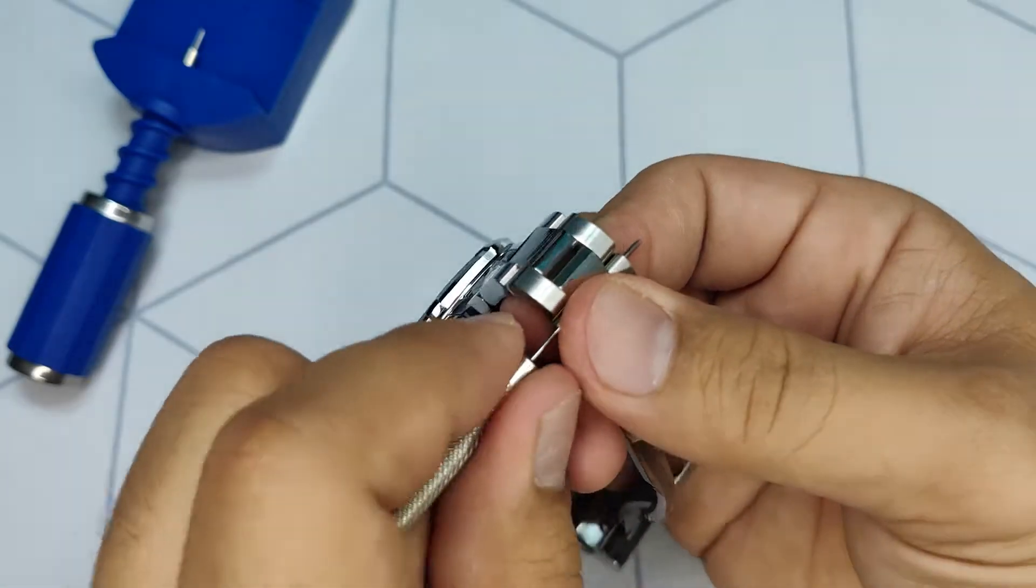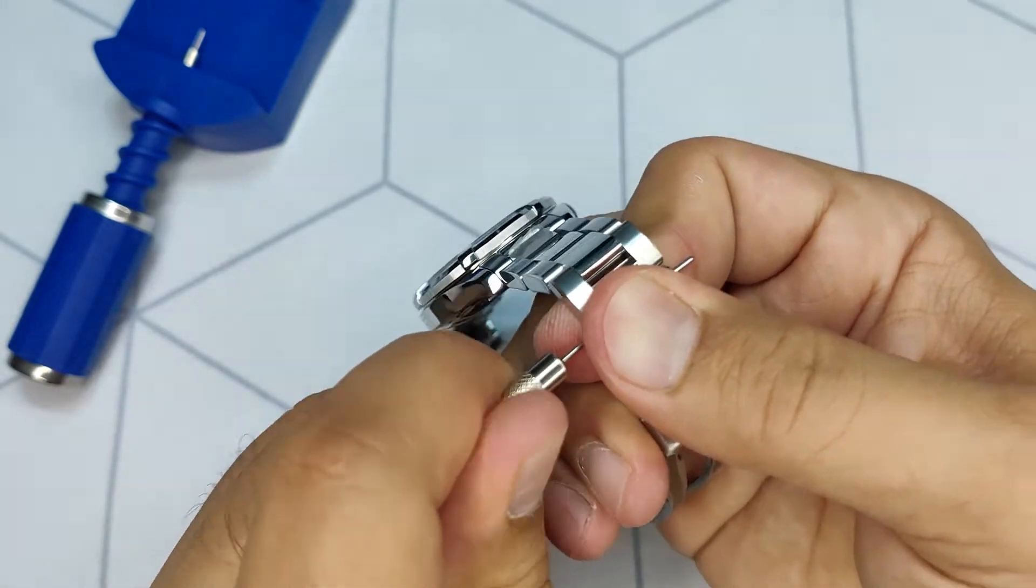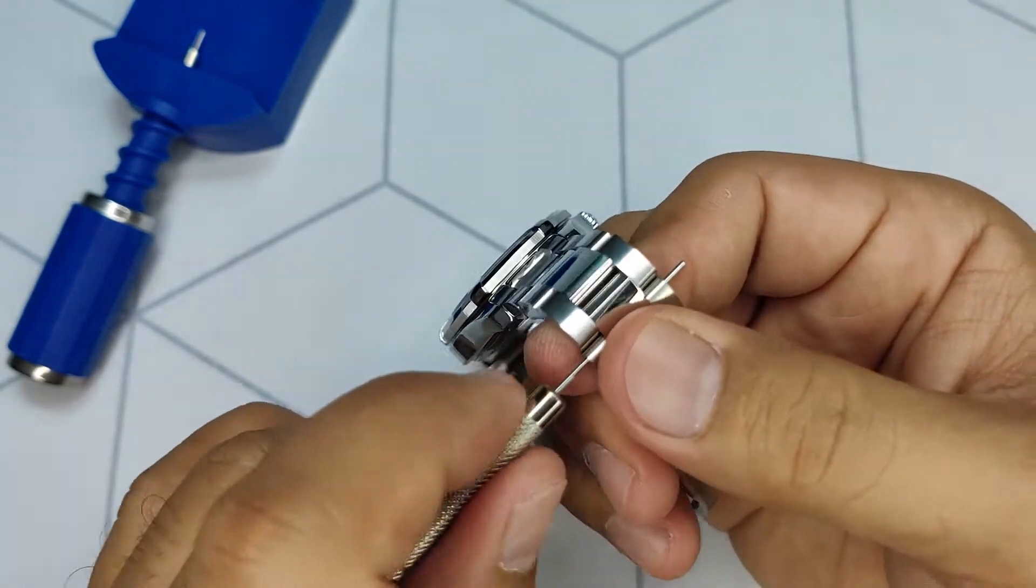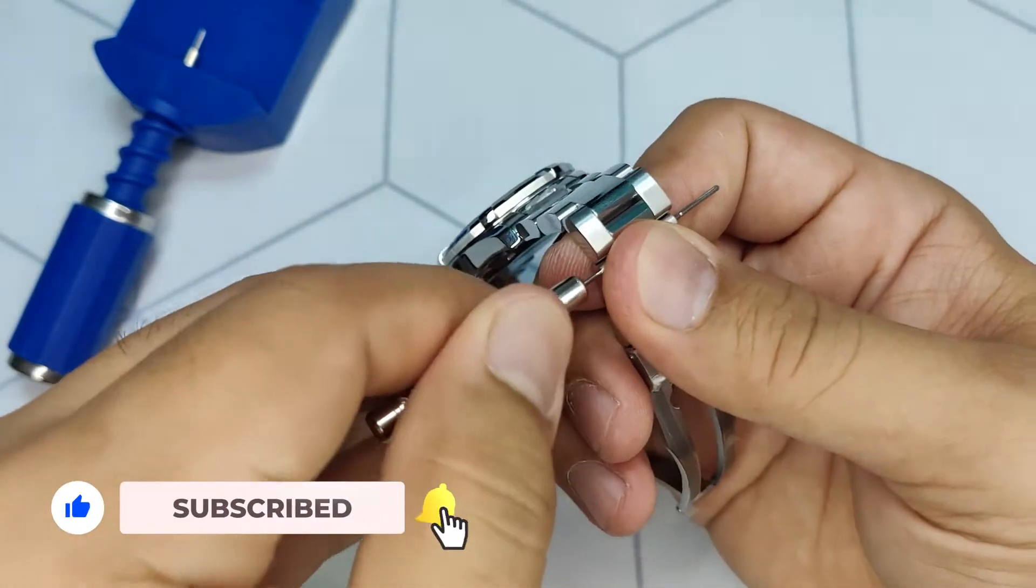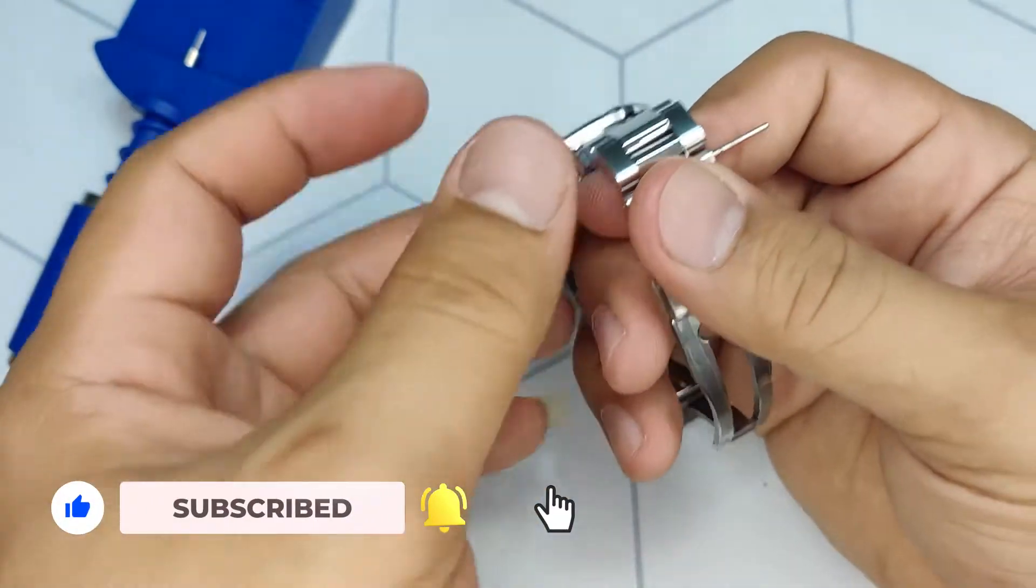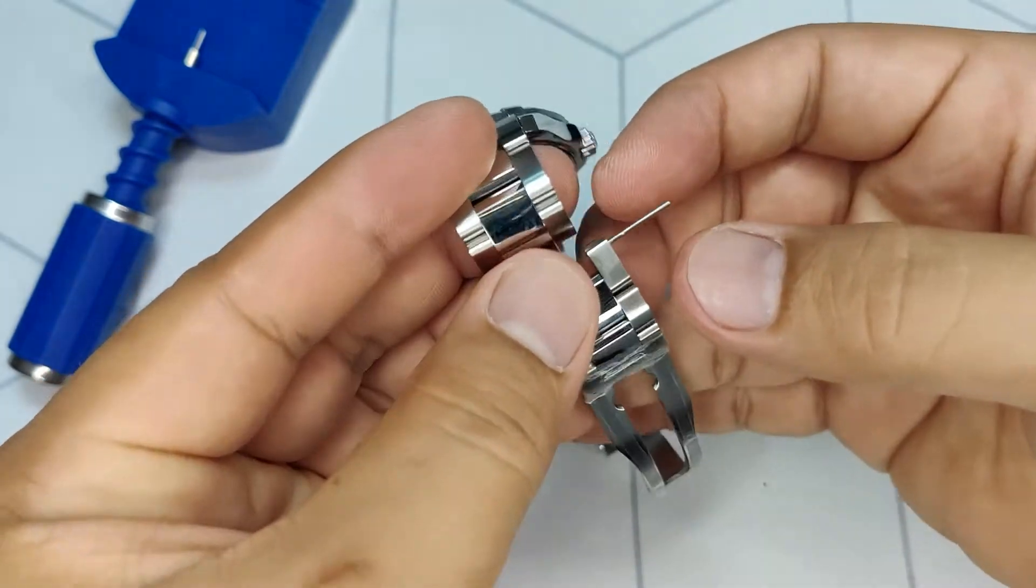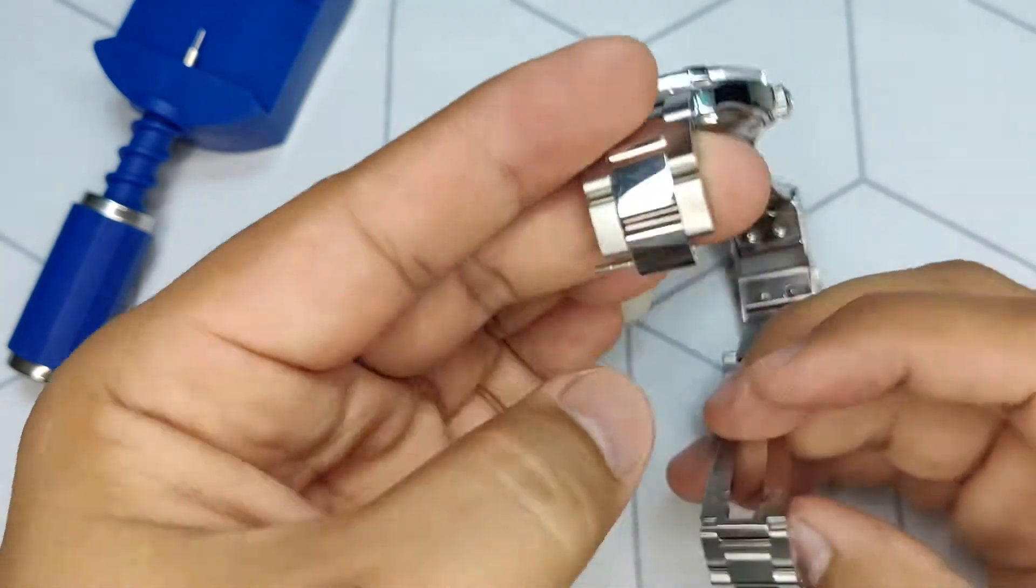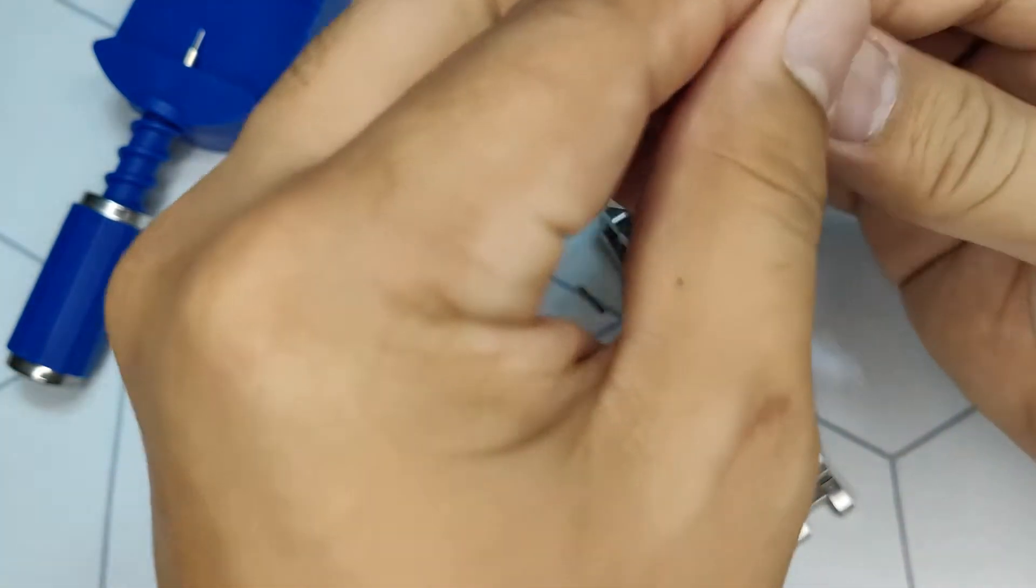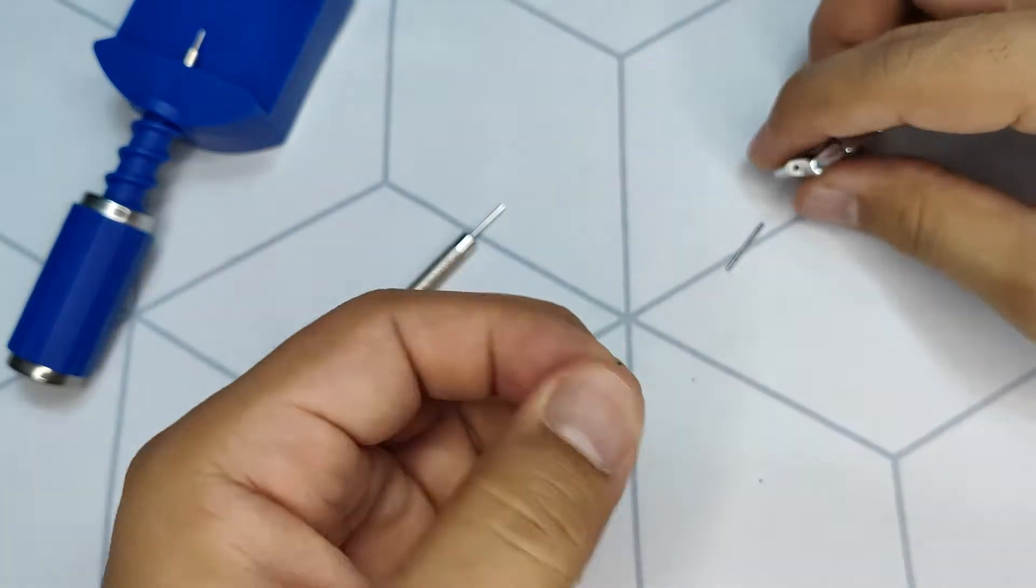Then remove the pin with tweezers or use a pin pusher tool. Caution not to drop or lose the pin barrel located in the inner link. Secure both pin and barrel.